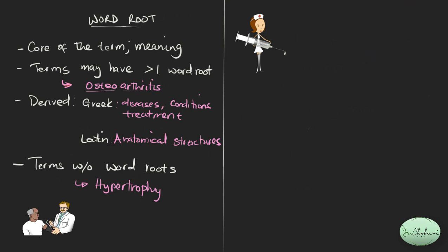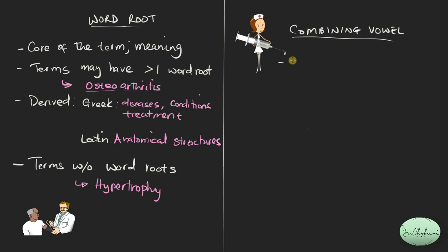The next word element we'll discuss is the combining vowel. A combining vowel is obviously a vowel, and it connects. There are many vowels, but the most common ones you'll see are O and I. You may find words with different vowels in textbooks or on the internet, but by far the most common ones are O and I.